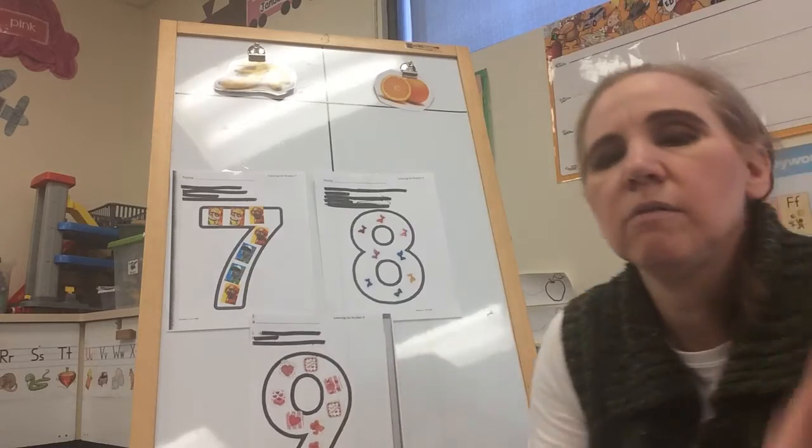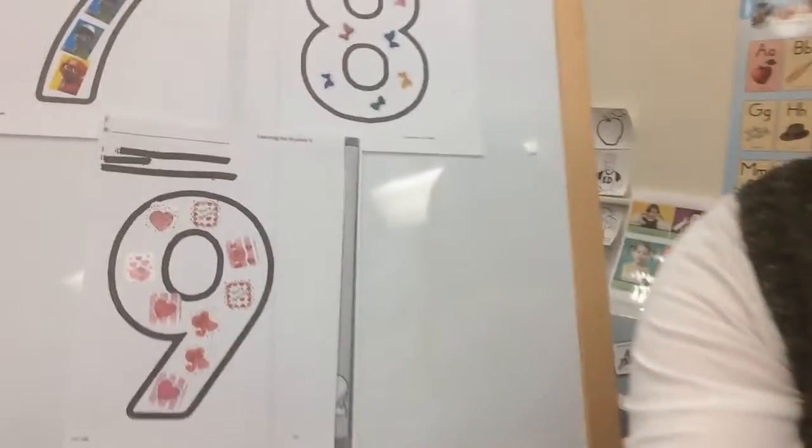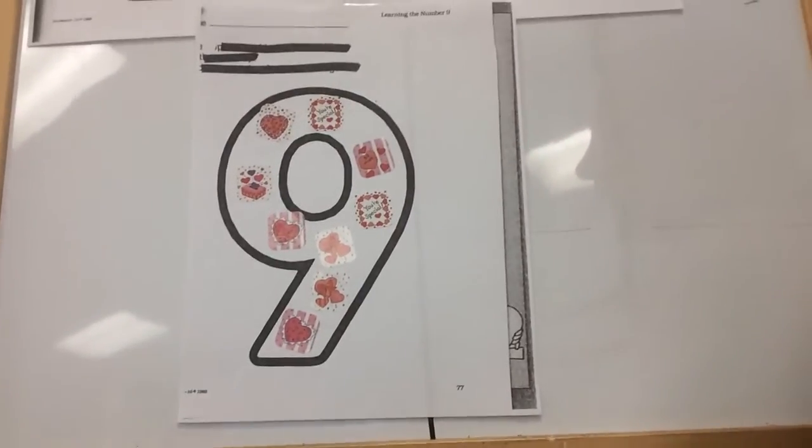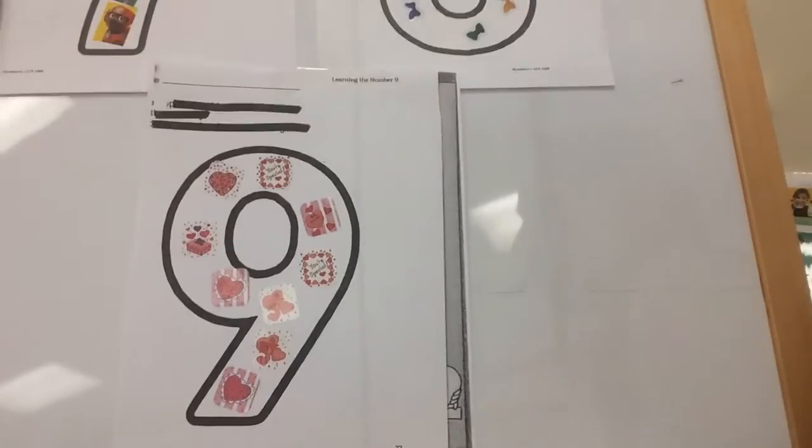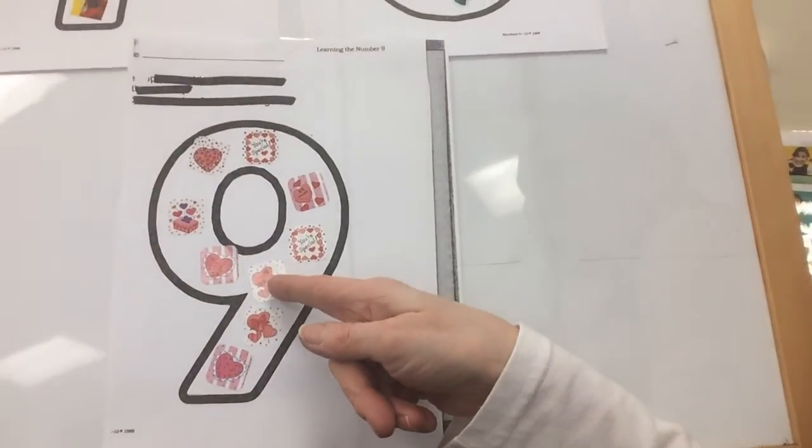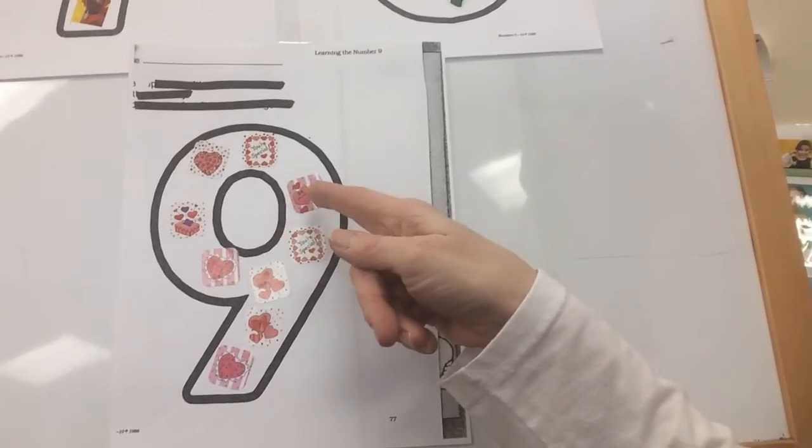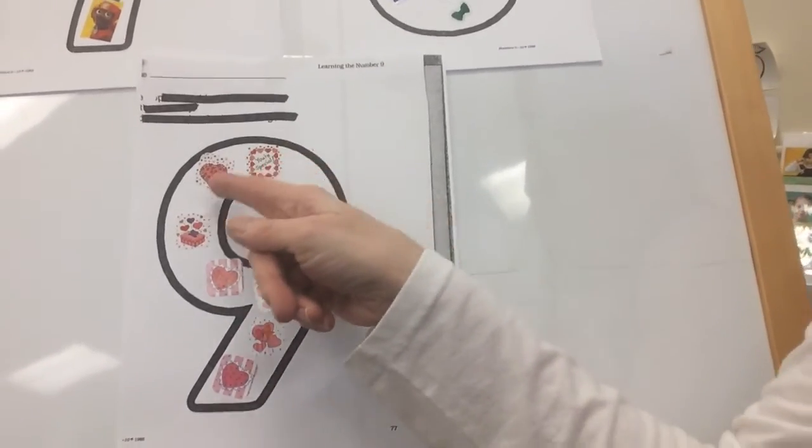Now maybe you can't see. Let me see if you can see my nine. There you go. I have, there we go, nine. And we can count just to be sure. Hold on again, move my hands. One, two, three, four, five, six, seven, eight, nine.